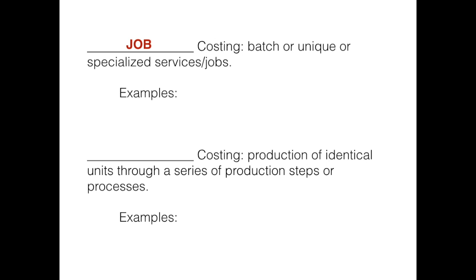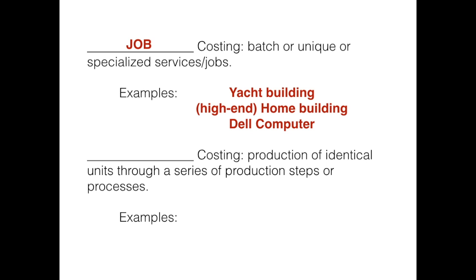Some examples of this would be like yacht building. Typically you won't produce thousands of this exact same yacht because these are high-ticket items. Someone will come in and order a specific type of yacht — what type of countertops do they want, what size, how long, how wide? So it's not cookie cutter. It's one job that you're completing.